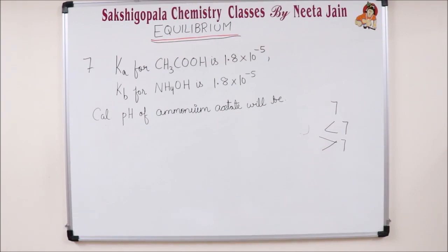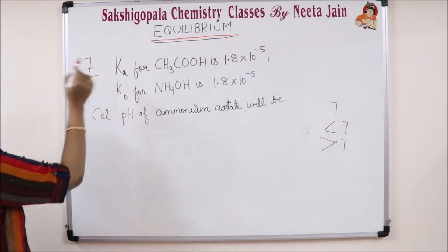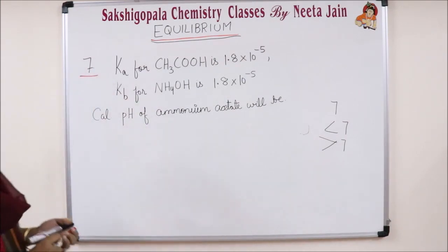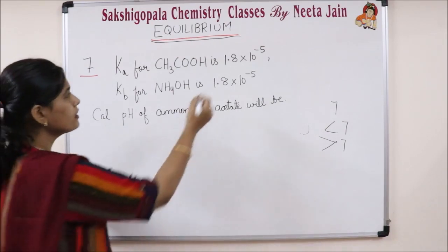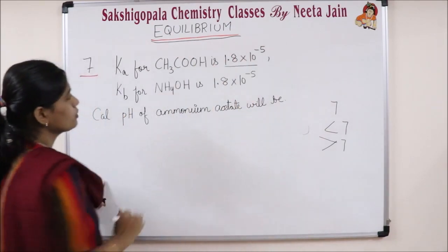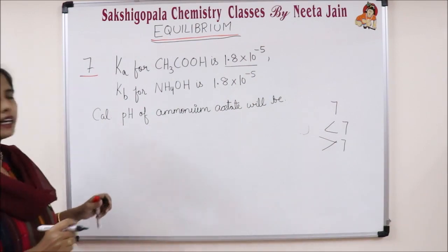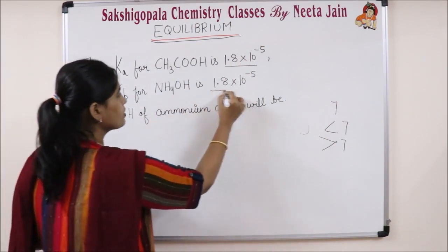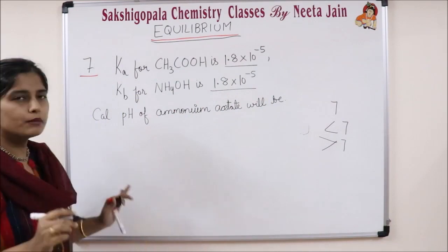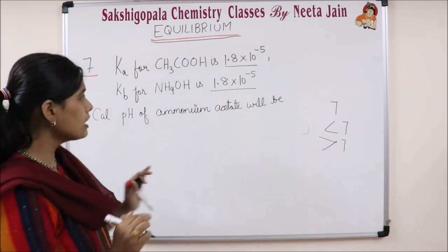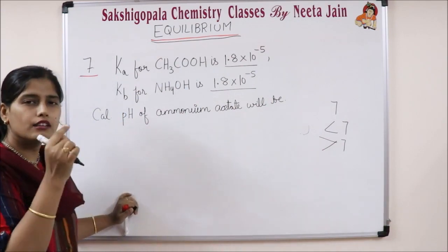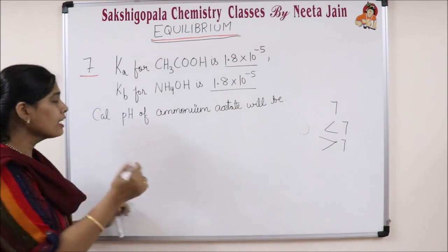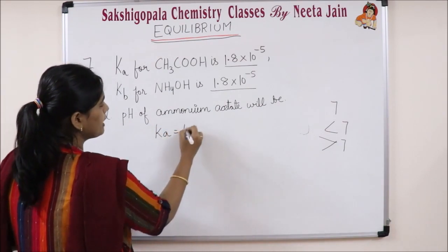Now see question number 7. Ka for acetic acid is 1.8 × 10⁻⁵. Kb for ammonium hydroxide, NH4OH, is also 1.8 × 10⁻⁵. So the value of Ka is equal to Kb.